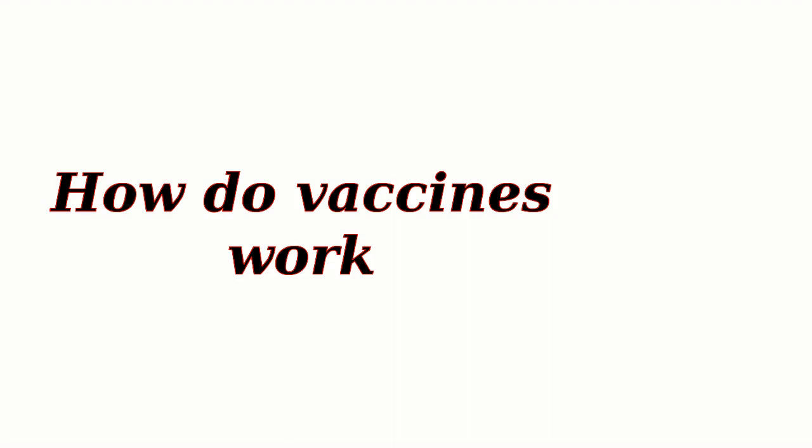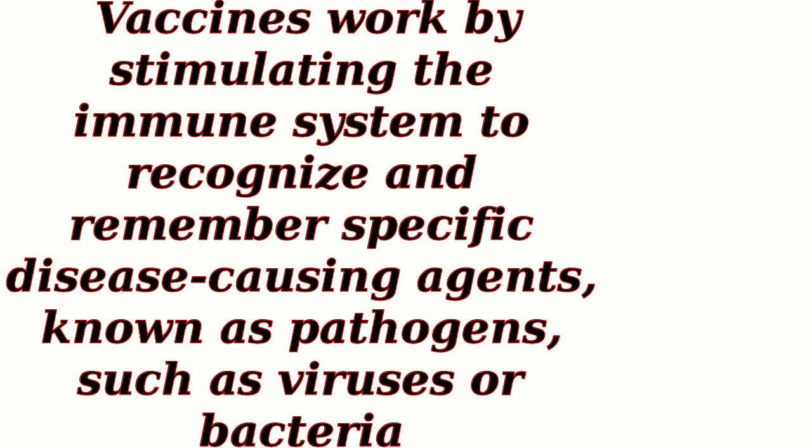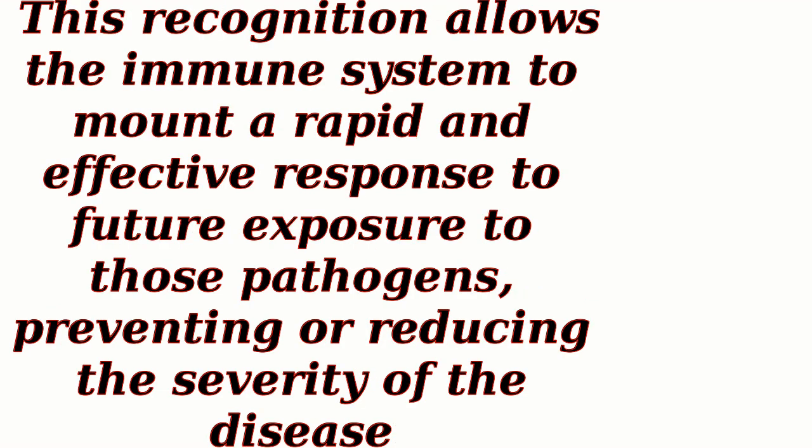How do vaccines work? Vaccines work by stimulating the immune system to recognize and remember specific disease-causing agents, known as pathogens, such as viruses or bacteria. This recognition allows the immune system to mount a rapid and effective response to future exposure to those pathogens, preventing or reducing the severity of the disease.